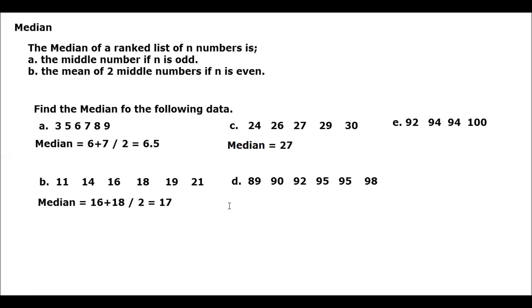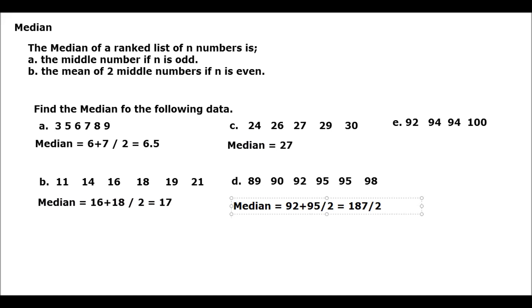For letter D, counting the data gives us 6. So N is even, meaning the median is the mean of the 2 middle numbers. The 2 middle numbers are 92 and 95. So 92 plus 95 divided by 2 equals 187 divided by 2, and that equals 93.5. So 93.5 is our median.